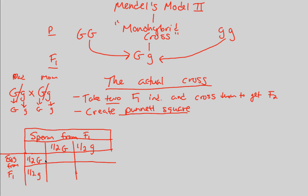We cross these by multiplying. One-half times one-half gives one-fourth, so the offspring has a one-fourth chance of being capital G, capital G. Another box gives one-fourth capital G from mom with lowercase g from dad. The third box gives one-fourth capital G from dad combined with lowercase g from mom. And the last option is one-fourth lowercase g, lowercase g — crossing one-half lowercase g with one-half lowercase g.